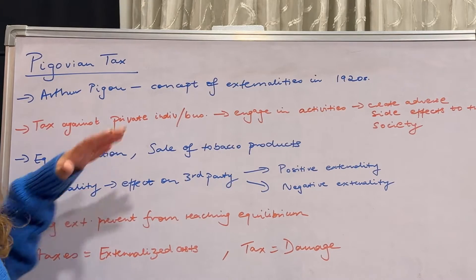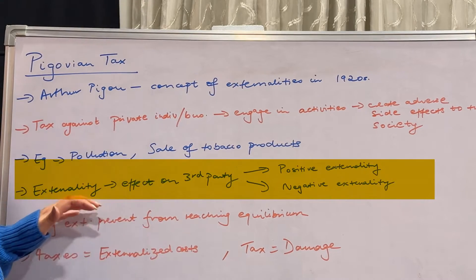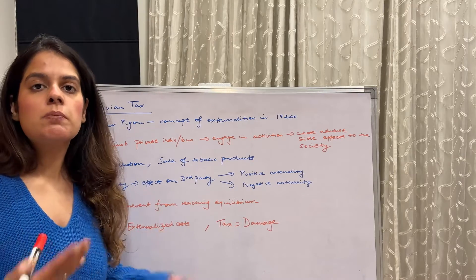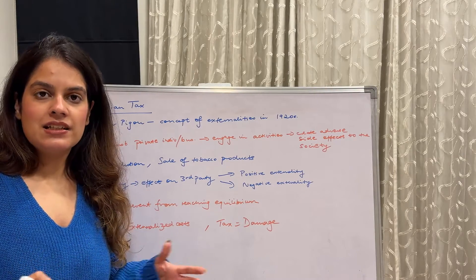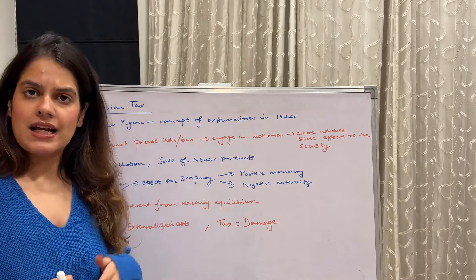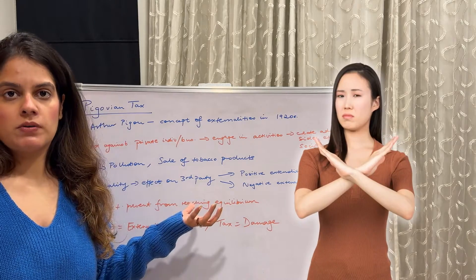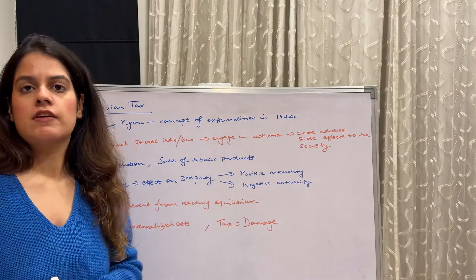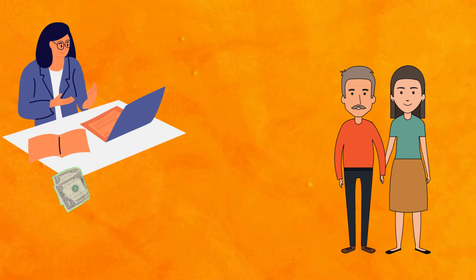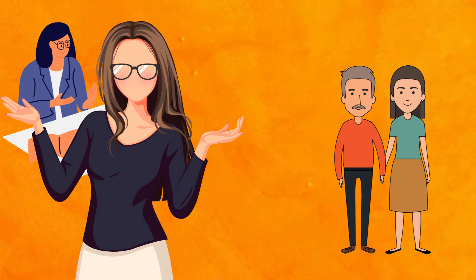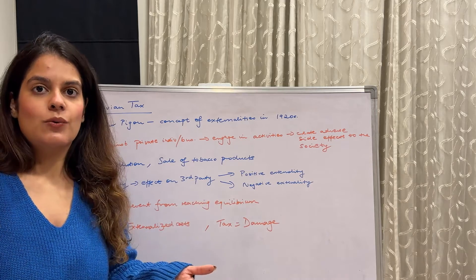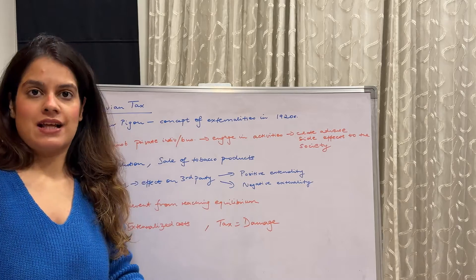Basically, externality is the effect on a third party — it's not related to the person directly but indirectly, from outside, that is external. It can be positive or negative. For example, my parents spent money on my education, and since I became educated, I wanted to teach all of you on YouTube. You are the third party here — so that is a positive externality.